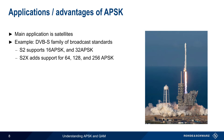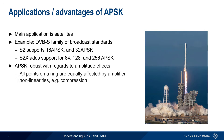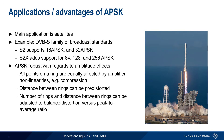One of the main reasons for using APSK in satellite applications is that APSK is robust with regards to various amplitude effects, and it allows the use of non-linear amplifiers. For example, non-linearities such as compression may change the relative distances between different amplitude rings. But all the points in one given amplitude ring will be equally affected, which minimizes the impact of this non-linearity. In fact, APSK allows the distances between the rings to be pre-distorted, so that the rings are the correct distance apart after non-linear amplification. APSK provides further flexibility in that the number of rings and the distance between the rings can also be chosen or adjusted in order to balance distortion versus peak-to-average power ratio.